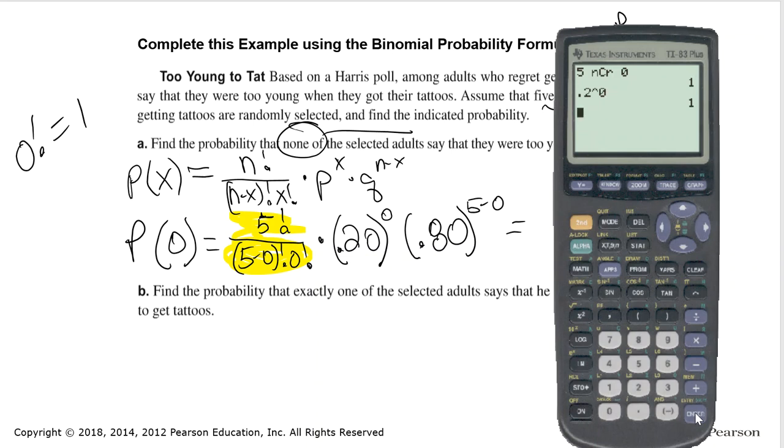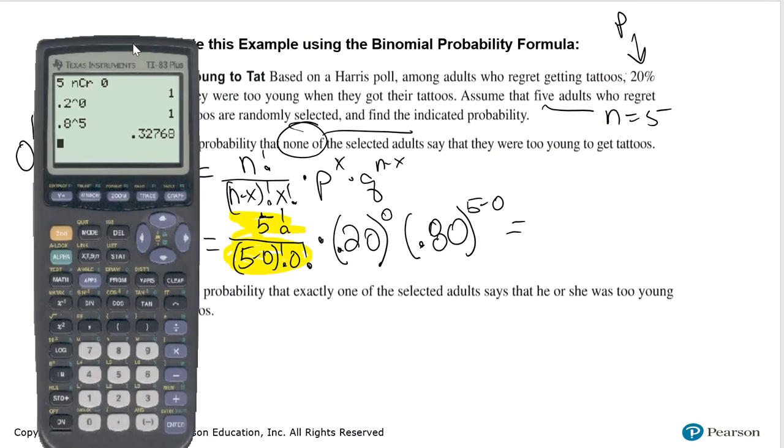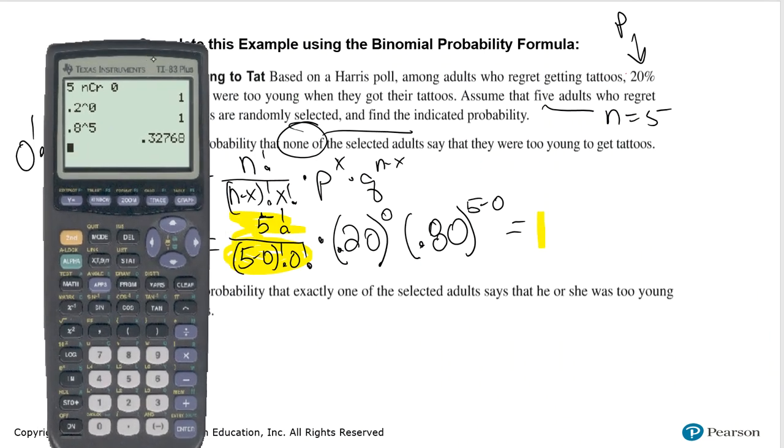So 0.20 to the 0. Do you remember what that is? Yes. Any non-zero number raised to a 0 power is going to yield 1. And then 0.8 raised to the 5 minus 0 is 5. That's going to give me that probability.